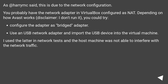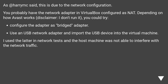As another answer said, this is due to the network configuration. You probably have the network adapter in VirtualBox configured as NAT. Depending on how Avast works — disclaimer, I don't run it — you could try: configure the adapter as a bridged adapter, or use a USB network adapter and pass the USB device through into the virtual machine. I used the latter in network tests and the host machine was not able to interfere with the network traffic.